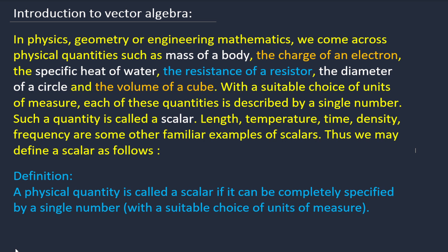In general, in physics, geometry, or engineering problems, we define physical quantities using measurements — like mass of a body, charge of an electron, specific heat, length, area, or volume of a cube or circle. These quantities can be described by a single number.